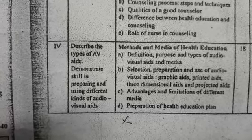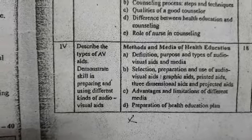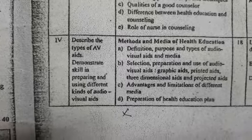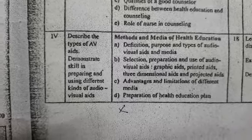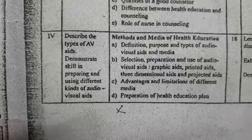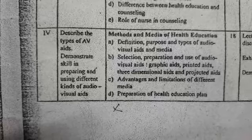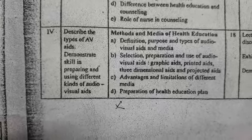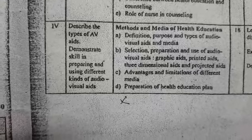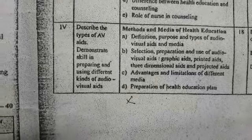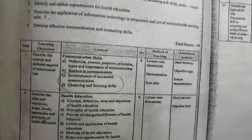The last unit covers methods and media of health education — definition, purpose, and types of audio-visual aids and media selection, preparation and use of audio-visual aids including graphic aids, printed aids, three-dimensional aids, and projected aids, as well as advantages and limitations of different media, and preparation of a health education plan.